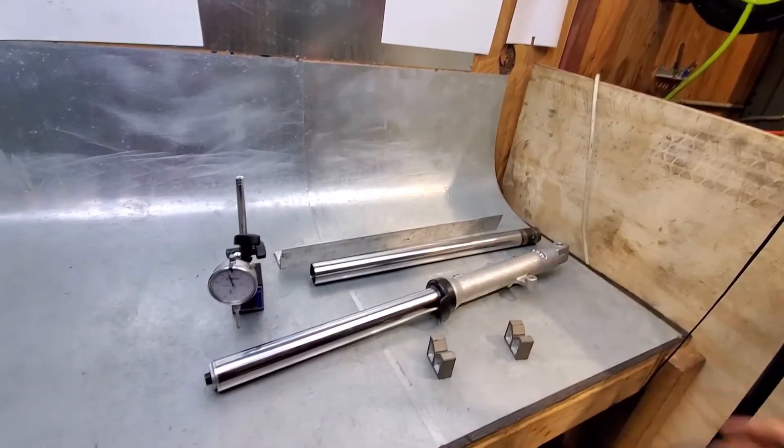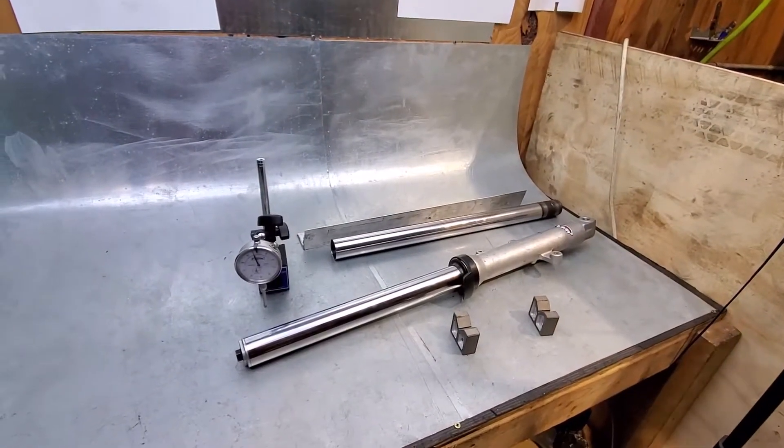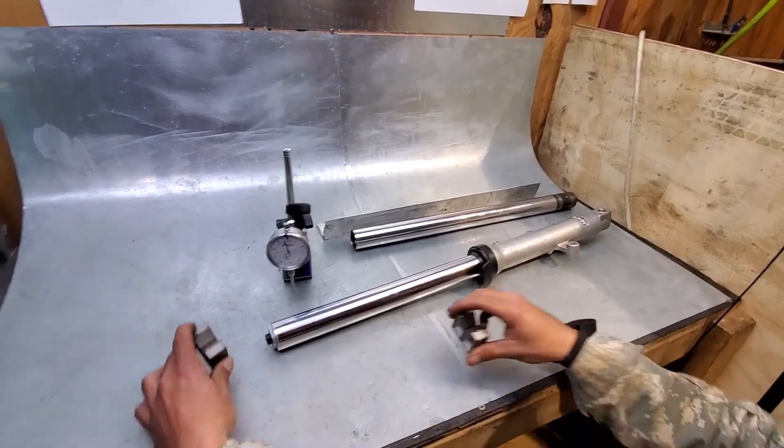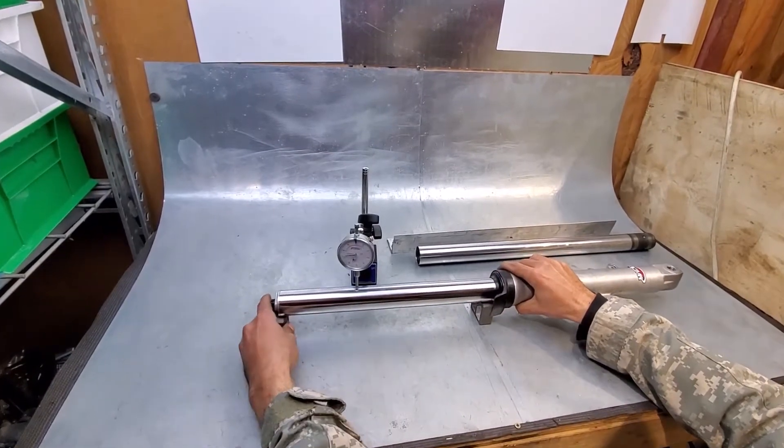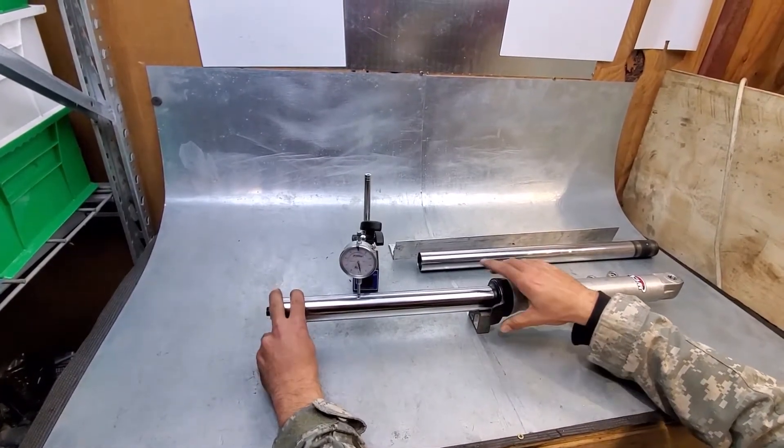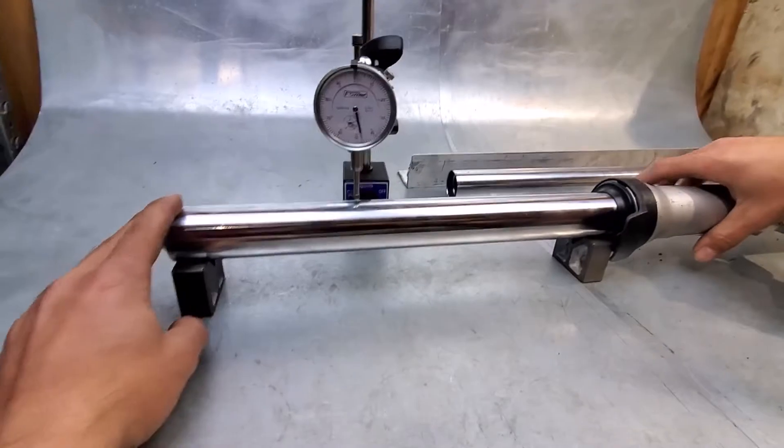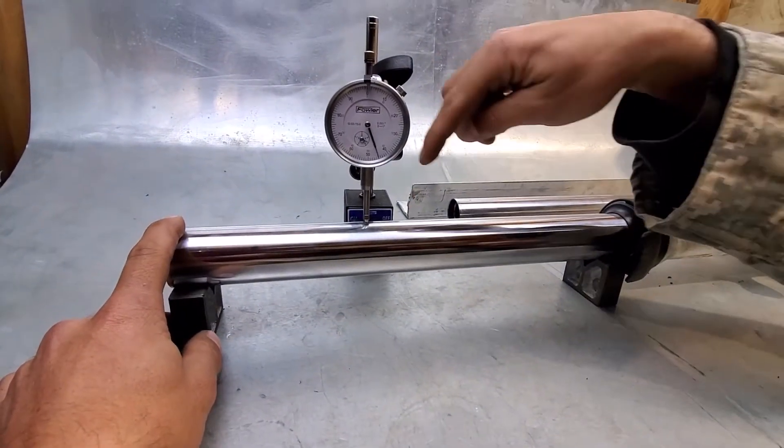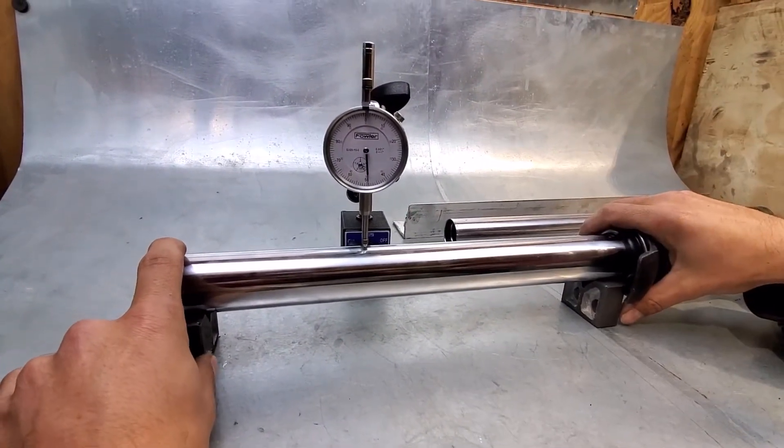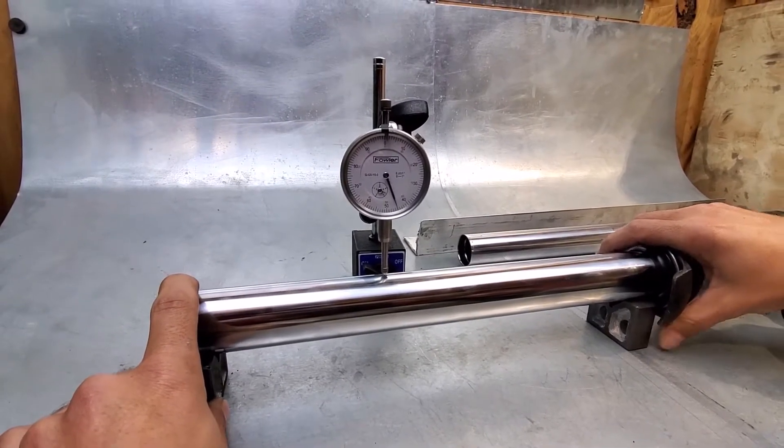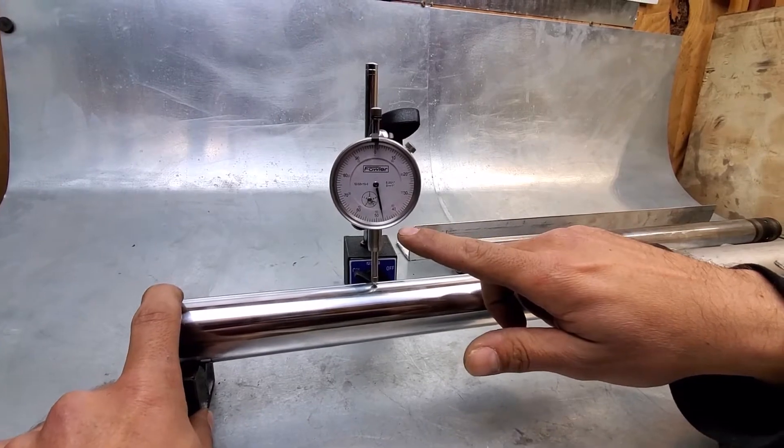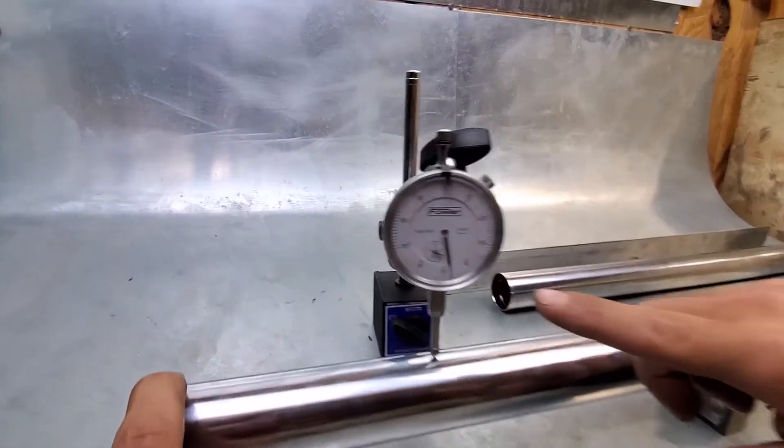Starting from the best method, obviously a dial indicator and v-blocks is going to be the most precise way of doing this. So what I will do is set up the fork on the v-blocks and make sure this is as perpendicular as it can be. If you're wondering where perpendicular is, it's the place where you'll get the highest or lowest reading.